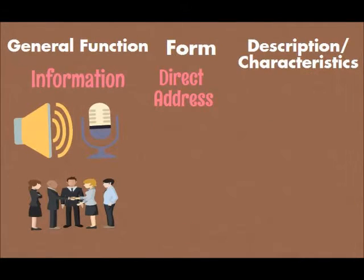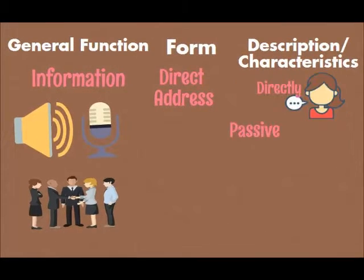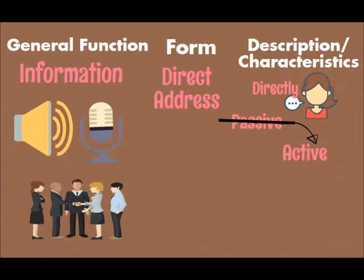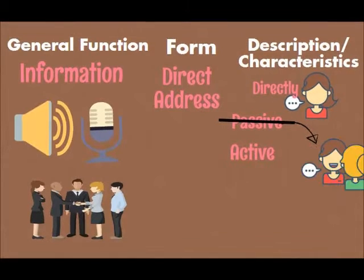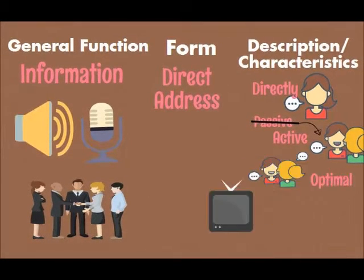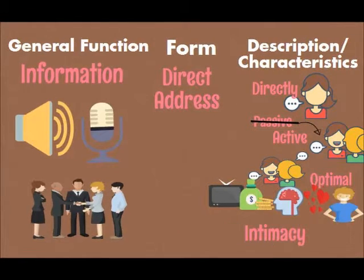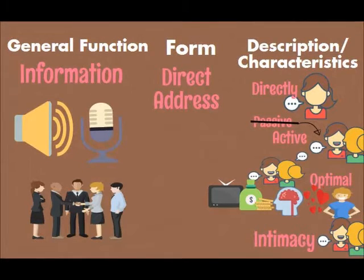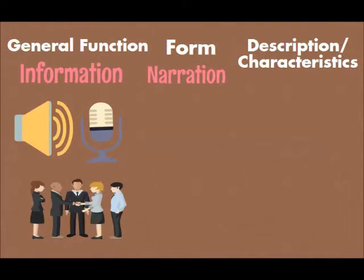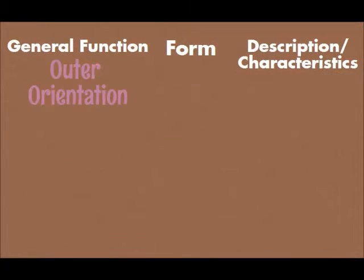The second form is direct address: this happens when the performer speaks directly from his or her screen position. You are no longer passive observers but have become active dialogue partners even if the dialogue is one-sided. It provides more optimal information exchange. It tells you what to watch, what to buy, what to think, what to feel, and how to behave. It carries a high degree of intimacy because this one-sided conversation takes place in the most familiar surroundings possible, for example, in your homes. The third form is narration: the spoken word is often much more effective in advancing a plot than pictures are.